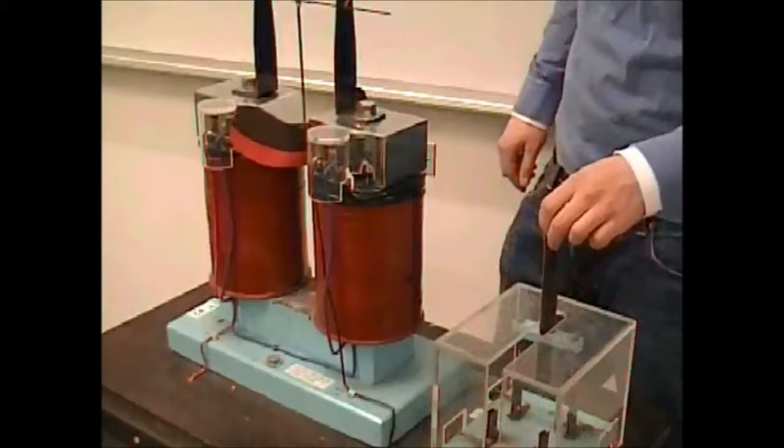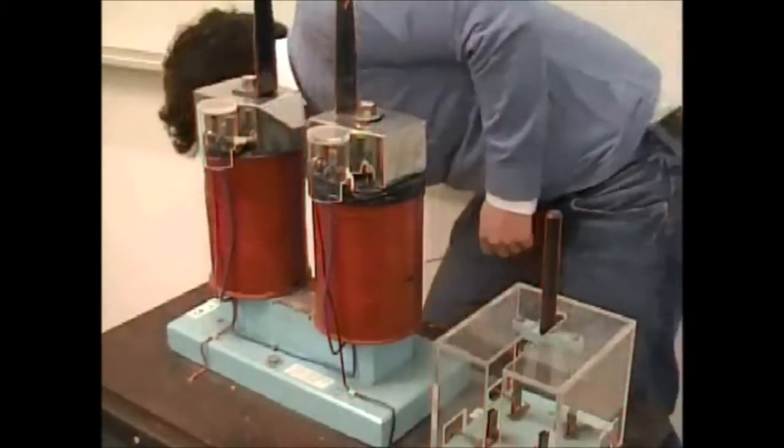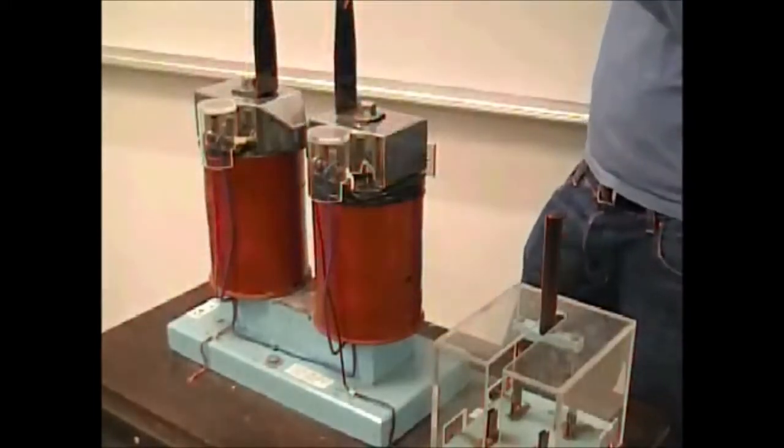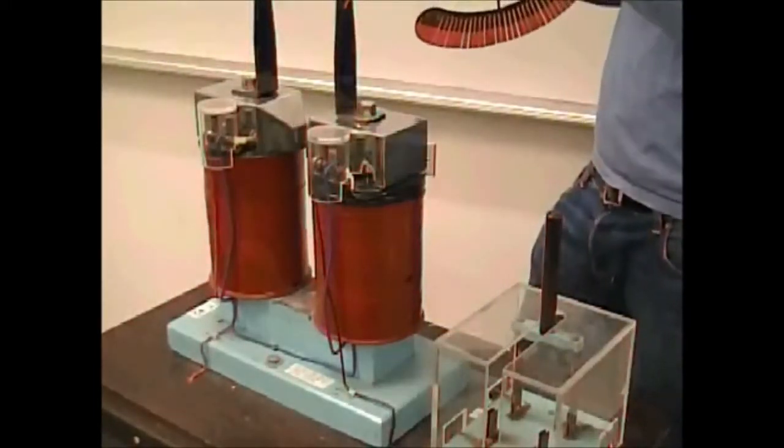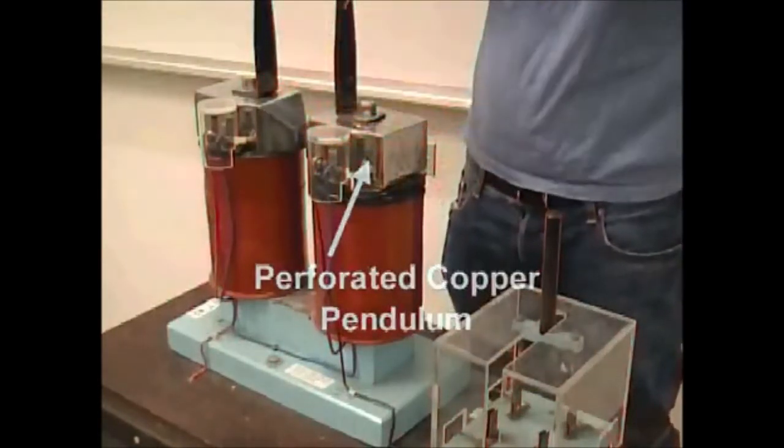Once the magnets are on, the pendulum experiences a changing magnetic field as it swings. This changing magnetic field induces a voltage in the pendulum, which creates eddy currents. The magnetic fields created by these eddy currents slow the pendulum to a stop.